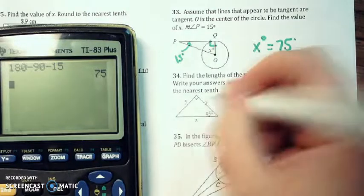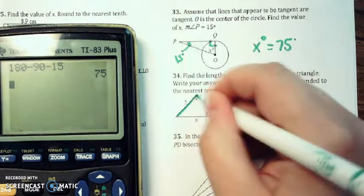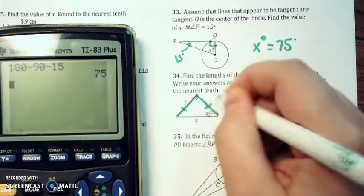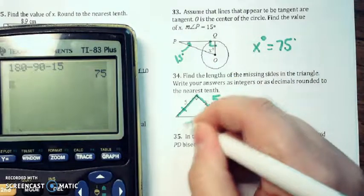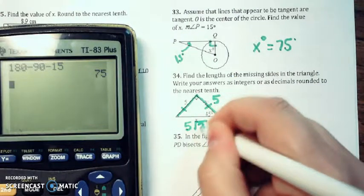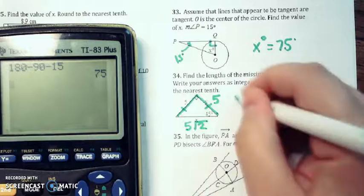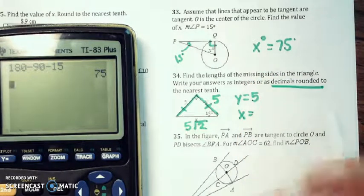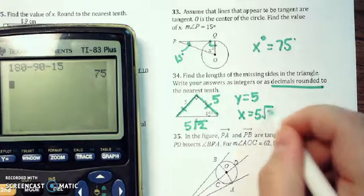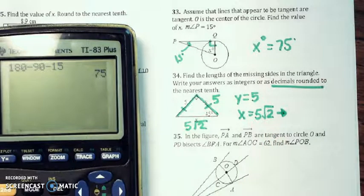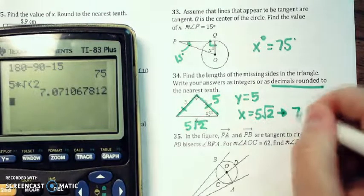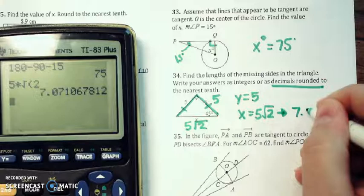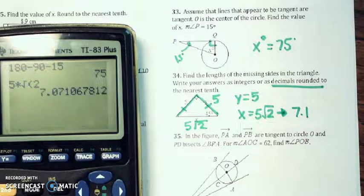Number 34, 45-45-90. The two legs in a 45-45-90 are the same, and the hypotenuse is the leg times the square root of 2. Now for this particular problem, it does say decimal round to the nearest tenth. So 5 roots of 2, I should write my answer as 5 times the square root of 2, which is going to be 7.1 to the nearest tenth. I'm going to round that up.